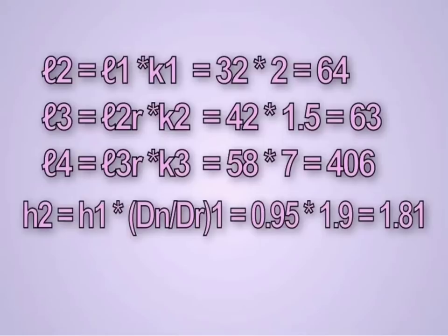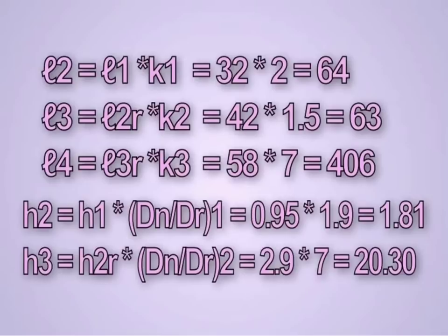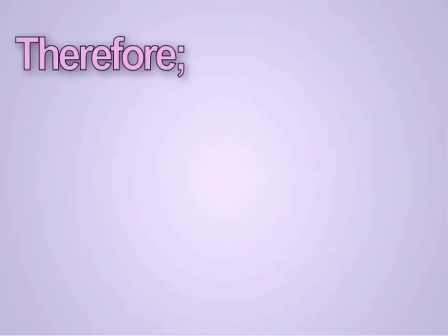For H2, that is the thickness of the second layer, that equals H1 times DN/DR1, which gives 1.8. H3, the thickness of the third layer, equals H2 replacement times DN/DR2. So the result from the product of these parameters gives layer resistivity values and thicknesses.